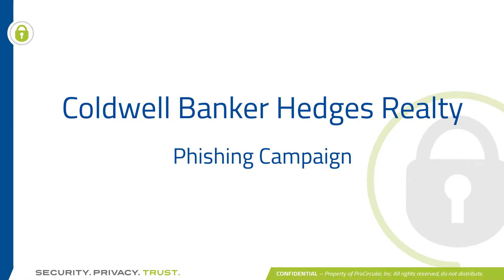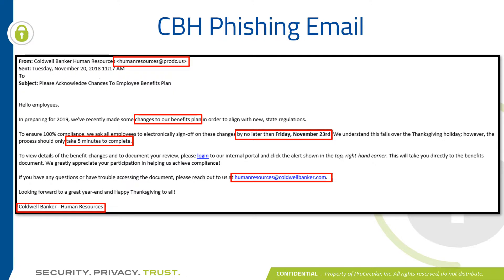We sent out a phishing campaign to everyone at Coldwell Banker Hedges. It came from 'Coldwell Banker Human Resources' and read: 'Hello employees. In preparing for 2019, we've recently made some changes to our benefits plan to align with new state regulations. To ensure 100% compliance, we ask all employees to electronically sign off on these changes by no later than Friday, November 23rd. We understand this falls over the Thanksgiving holiday; however, the process should only take five minutes. Please log in to our internal portal and click the alert in the top right-hand corner.' If you look at the email address it's coming from prodc.us — that is not a true Coldwell Banker email address.